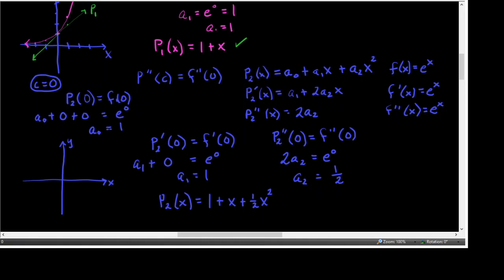The function looks like this — that's F. The linear equation is the tangent line to the curve at 0, so that's P sub 1. And then it looks like P sub 2 is a parabola that looks sort of like this — that's P sub 2.